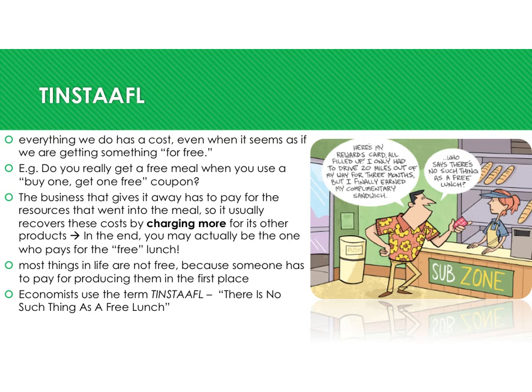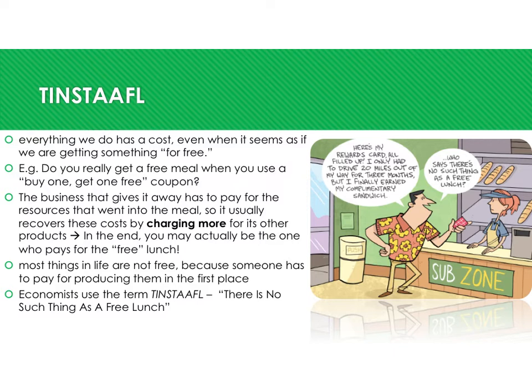The problem of scarcity has another important consequence. Because resources are limited, everything we do has a cost — even when it seems like we're getting something for free. Do you really get a free meal when you use a buy-one-get-one coupon? No, because the business has already given up monetary resources to pay for the ingredients. It usually recovers those costs by charging more for other products, so in the end you may be the one paying for the free lunch.